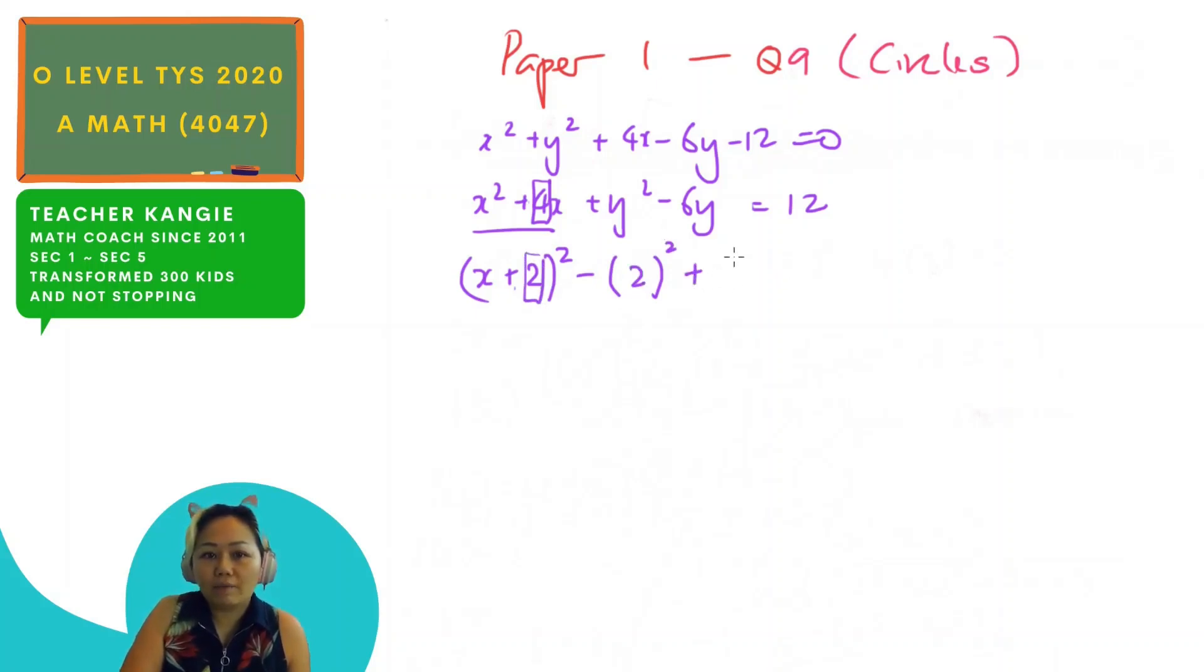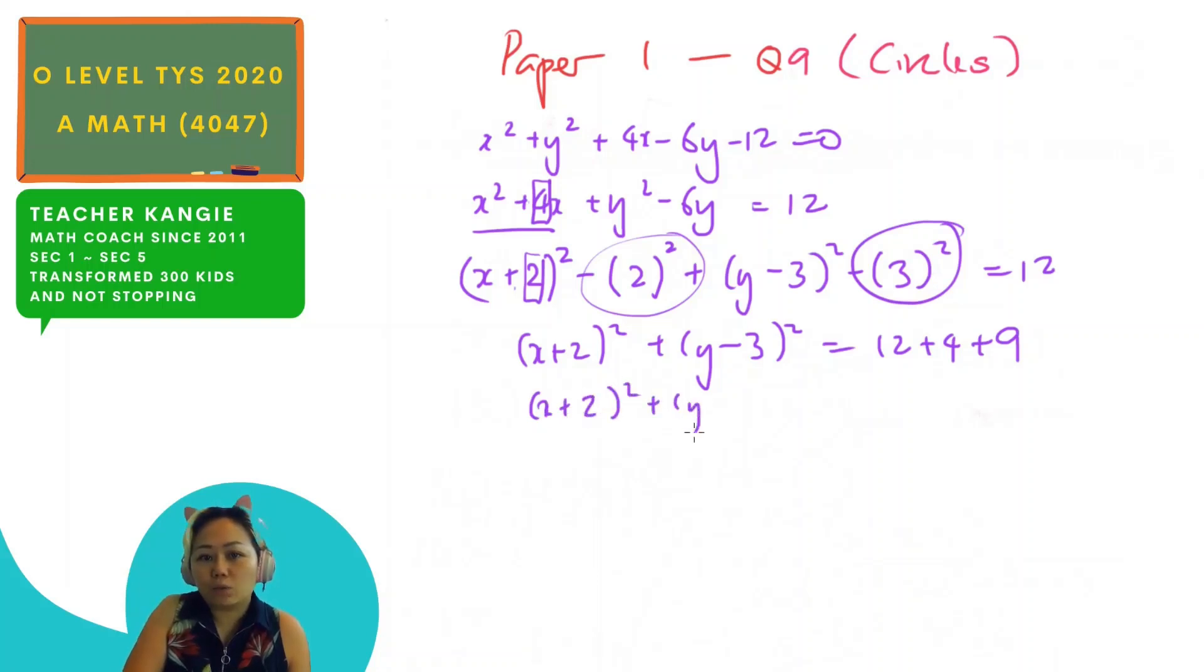So we do the same to the y. So it would be y minus 3 squared minus 3 squared. So this x plus 2 squared will remain. y minus 3 squared will remain. 12 minus 4, bring over to the other side, it will be plus 4. Minus 9, bring to the other side, it will be plus 9.